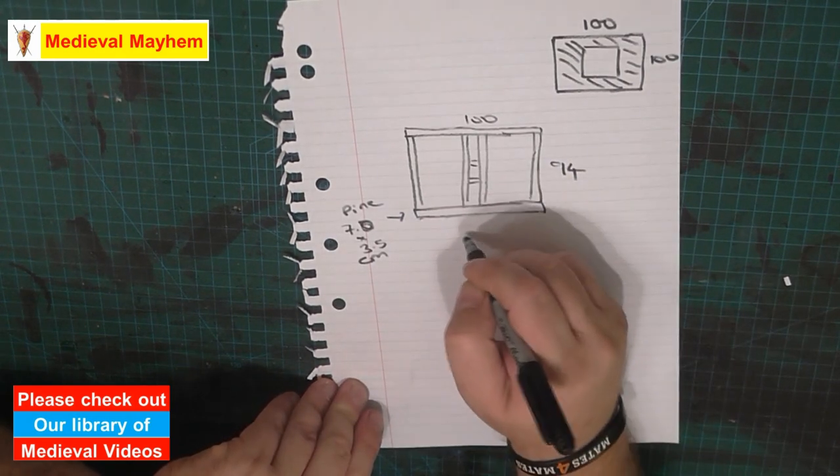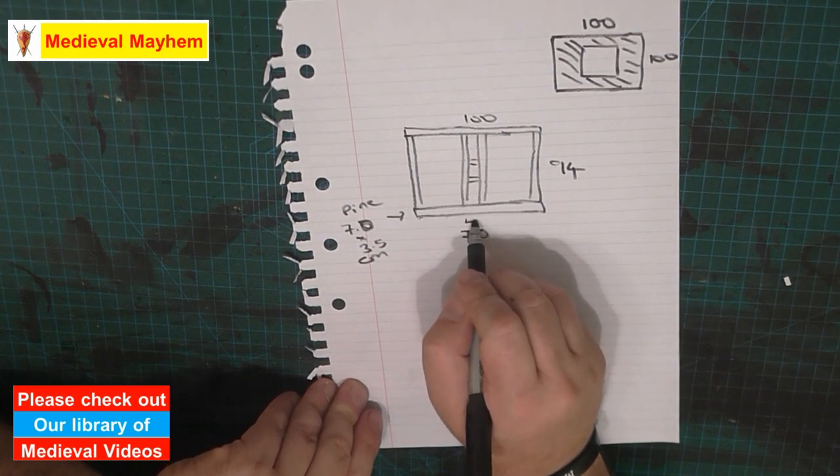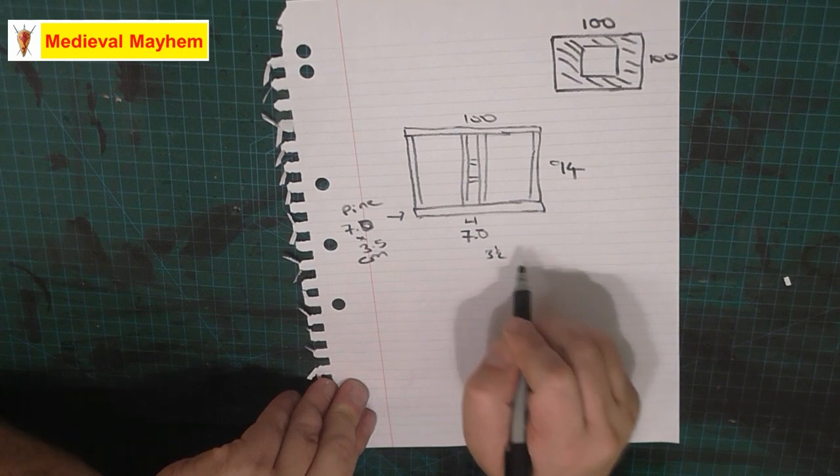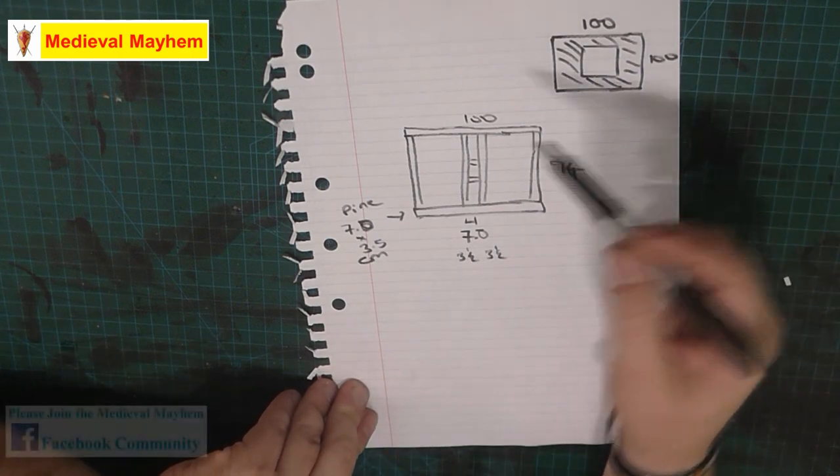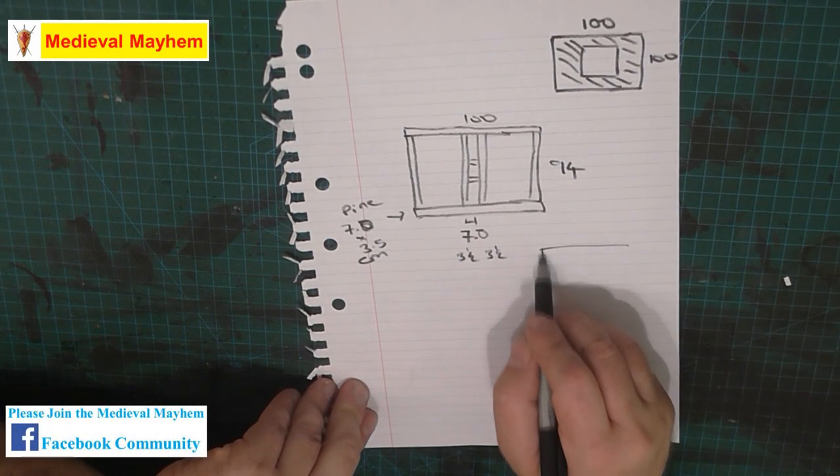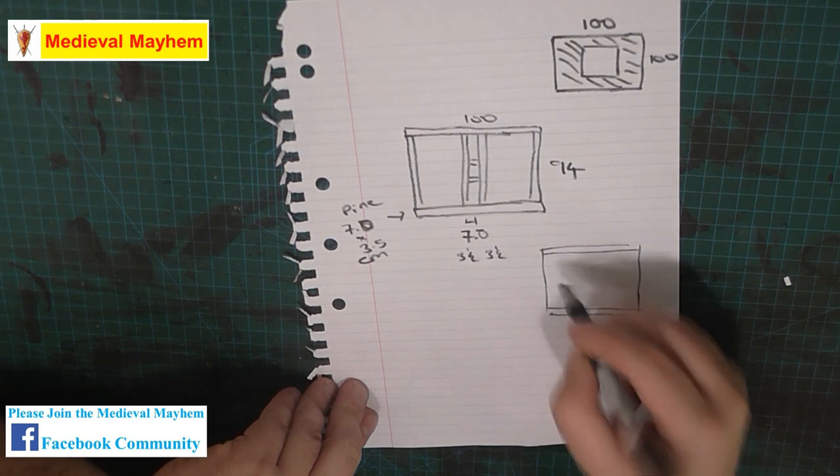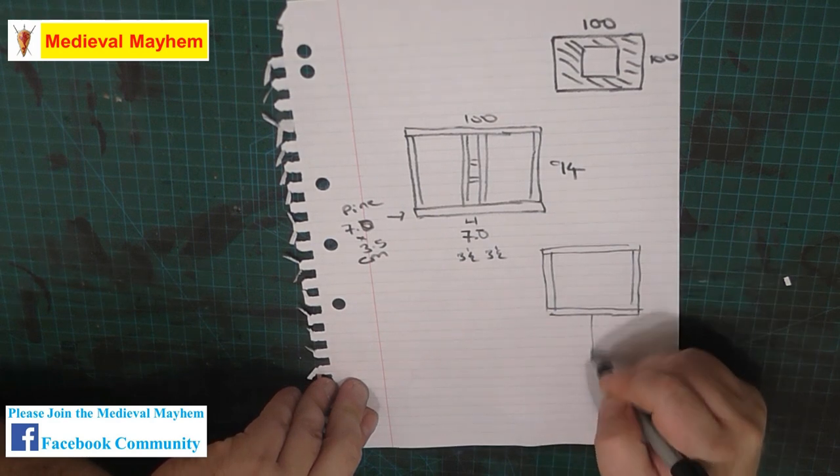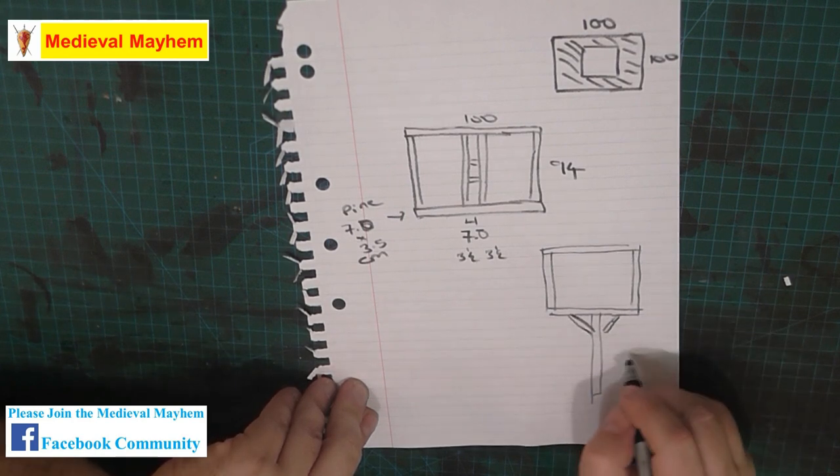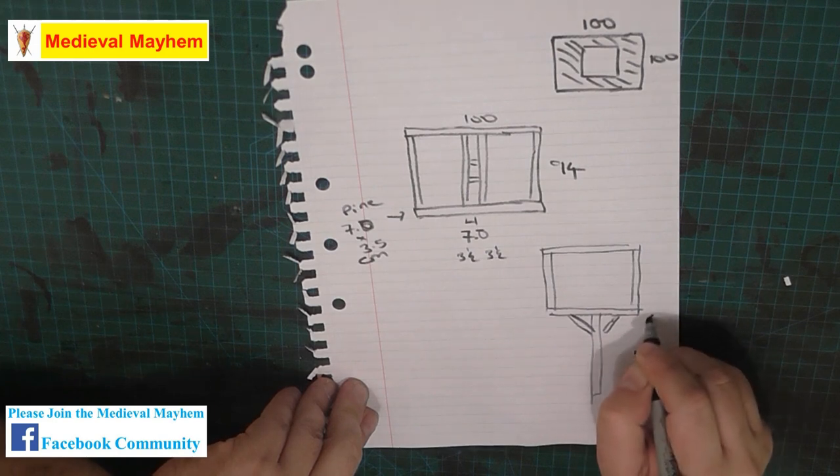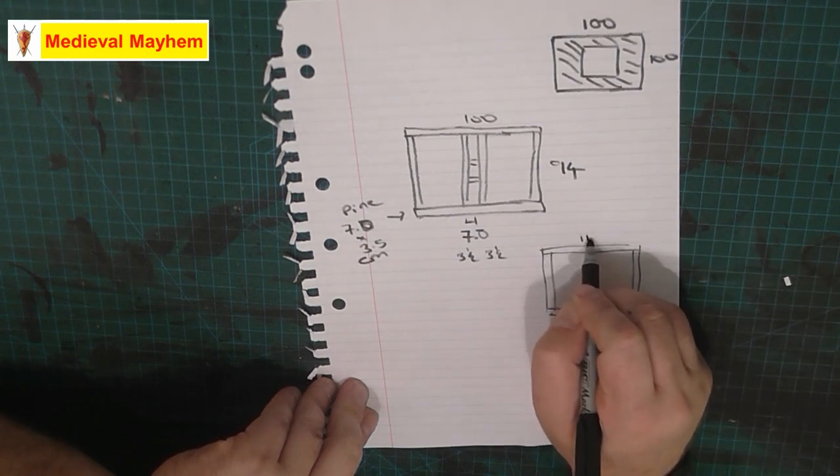So you've then got, and that is 7, that gap. You've then got 3.5, 3.5 and then you have the top section which is going to look pretty much like this. So I'm wanting to go with 55 centimeters off ground height.